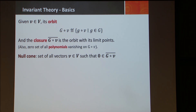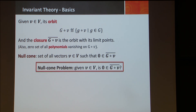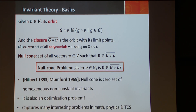In particular, there is one set called the null cone, which is the set of all vectors V such that zero is in the orbit closure of V. This gives us the null cone problem, which is very important. Given a vector V in the vector space, the problem asks: is zero in its orbit closure?